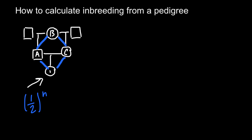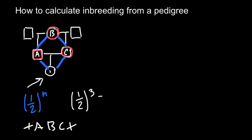Our pathway would be as follows: I, A, B, C, and I. We cross out I because we repeat it twice, so we have three nodes — first node, second, and third. According to our formula, this is going to be one-half raised to 3, and the answer would be one-eighth. So the inbreeding coefficient of I would be one-eighth.